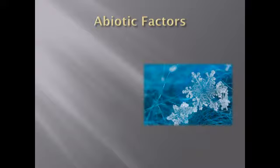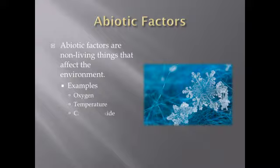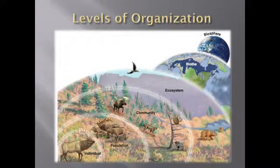The other thing ecologists look at are abiotic factors — the non-living things in the environment. These include things like water, sunlight, temperature, and carbon dioxide levels. Abiotic factors have almost just as much of an impact on the environment as biotic factors do, so make sure you can think of some examples of your own.